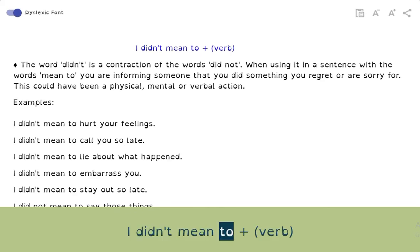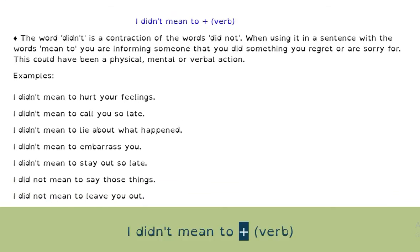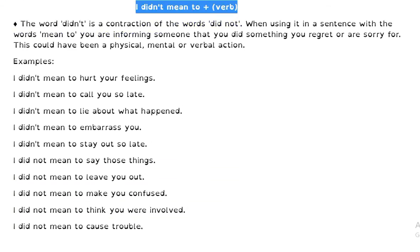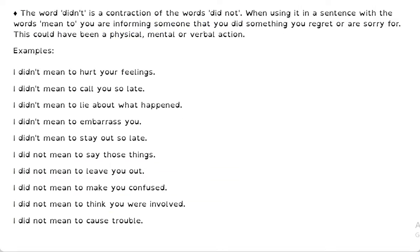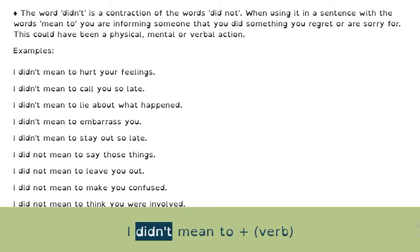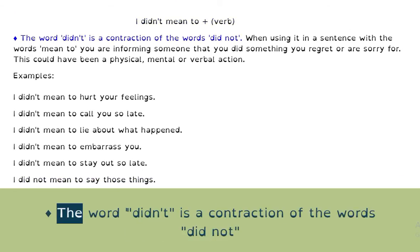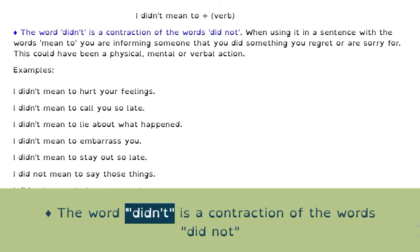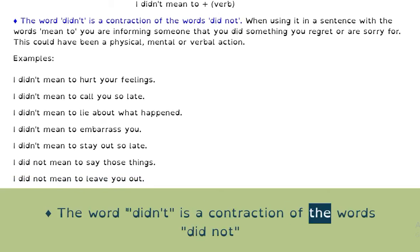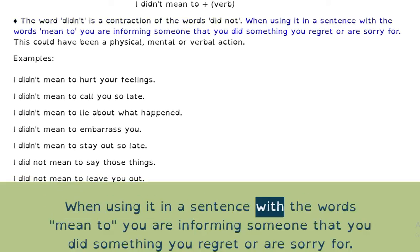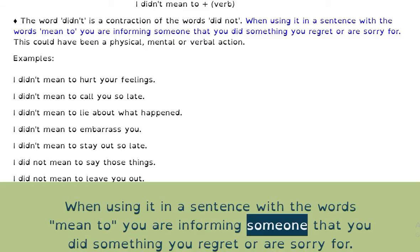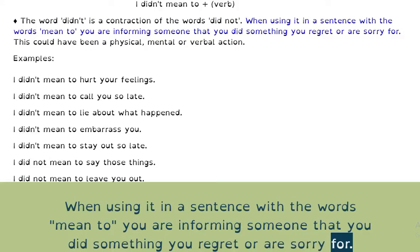I didn't mean to plus verb. The word didn't is a contraction of the words did not. When using it in a sentence with the words mean to, you are informing someone that you did something you regret or are sorry for.